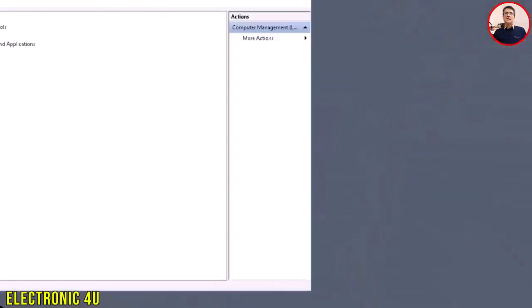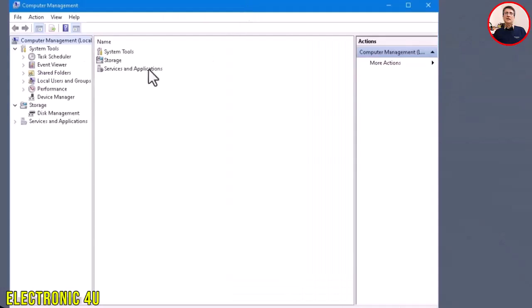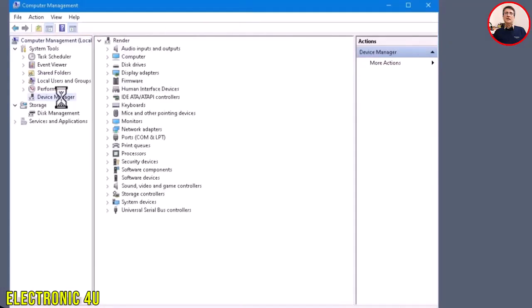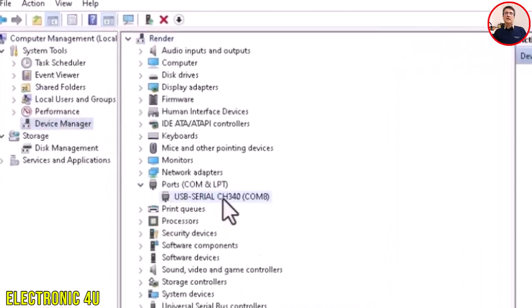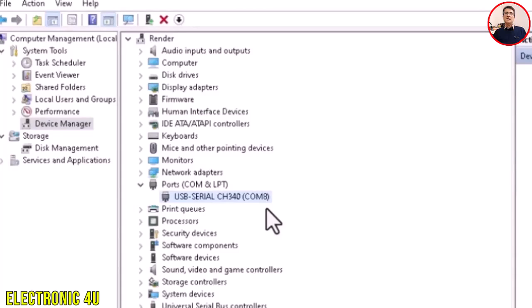To make sure the device is recognized correctly, we can go to the Windows Device Manager. In the ports section, COM and LPT, we should see a new serial port named something like USB Serial CH340. Be sure to remember the port number, for example COM8, because we will need it in the software.